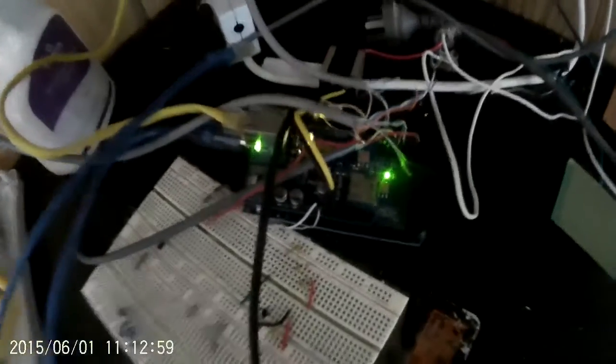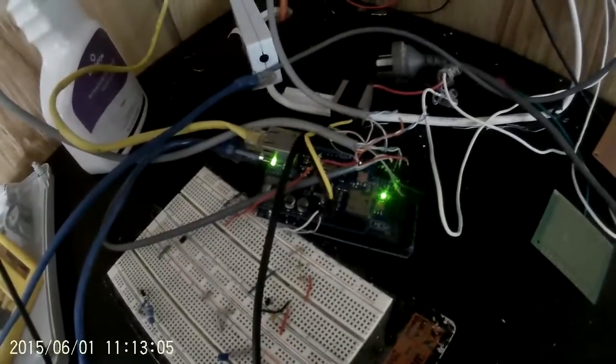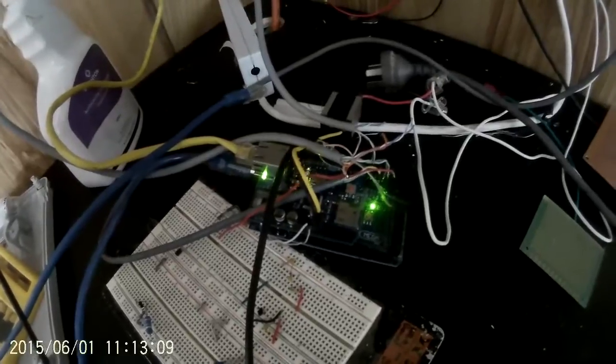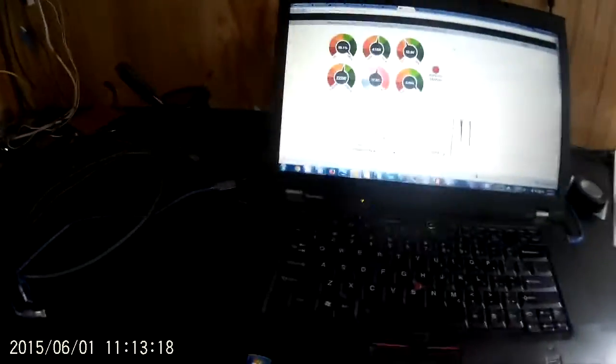The Arduino has got an Ethernet shield on it. So basically what the Arduino does is sits there and constantly interrogates all three devices and then sends back via the internet to my monitoring software which is based on something called Emoncms which is an open source monitoring software.